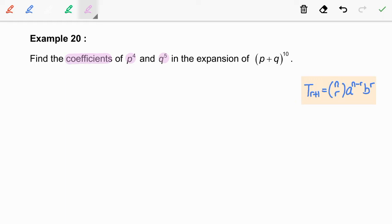We will work out this question in 4 steps. Step 1: Let us find a, b, and n by comparing (p+q)^10 with (a+b)^n. As we see here, a is p, b is q, and n refers to the power number which is 10.